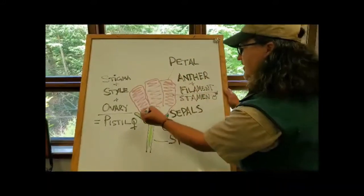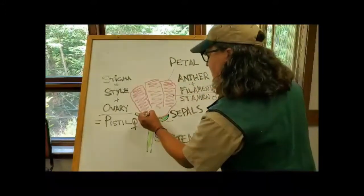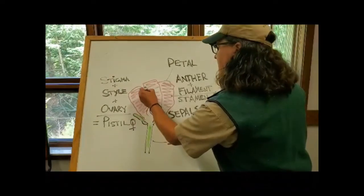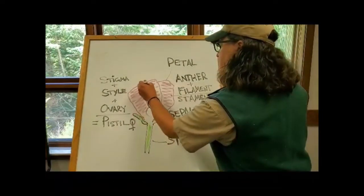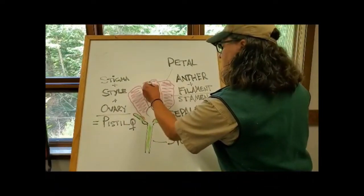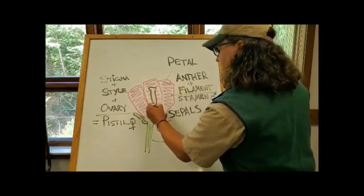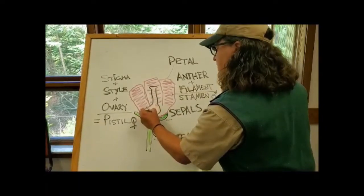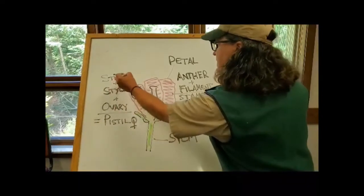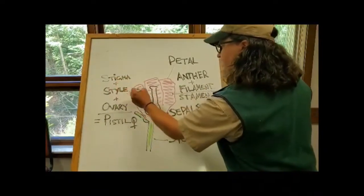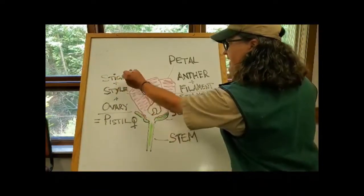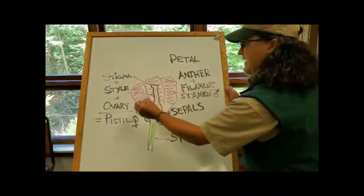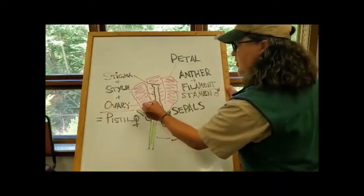In the interior of that, we'll draw the female parts first. We have what's called the style and the stigma. And down here is the ovary.